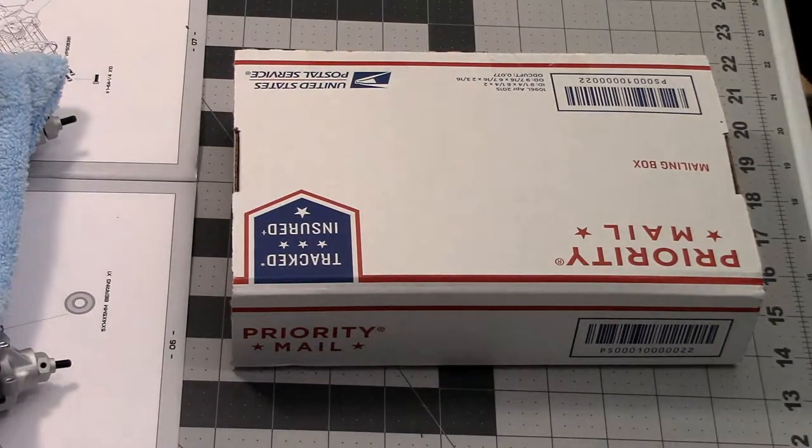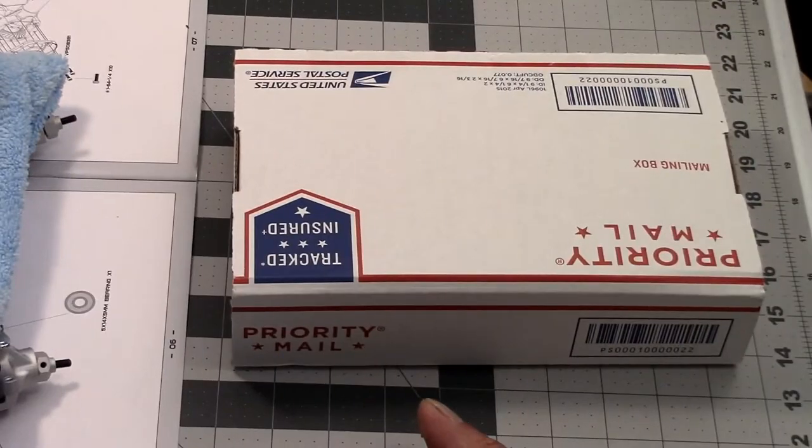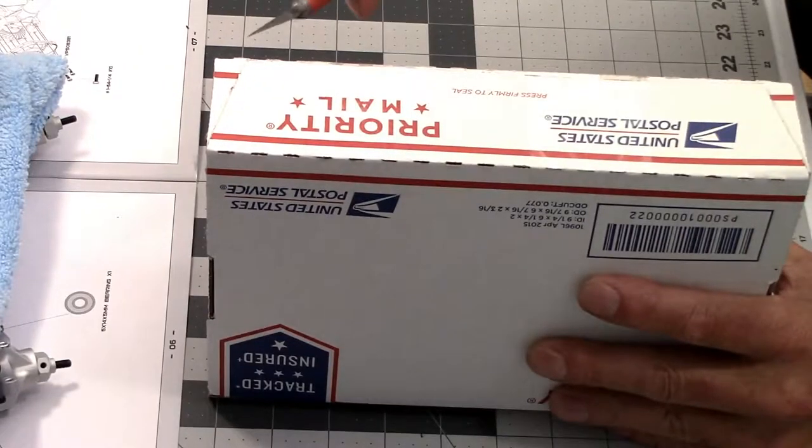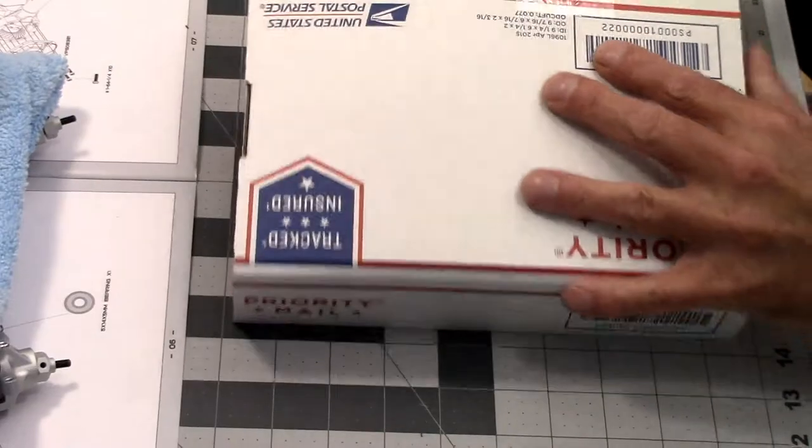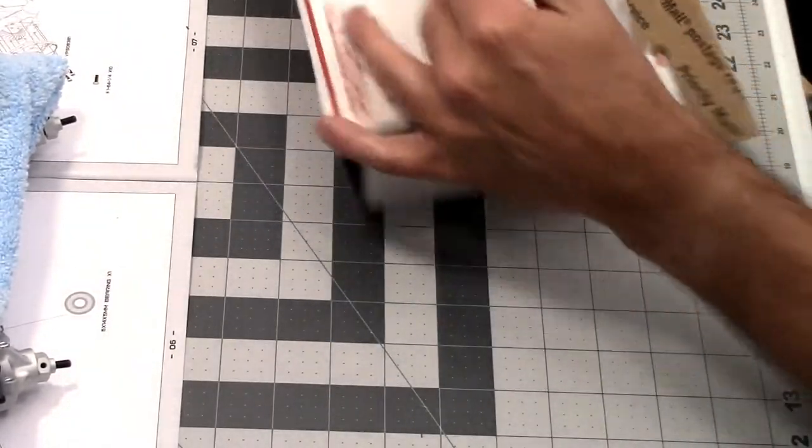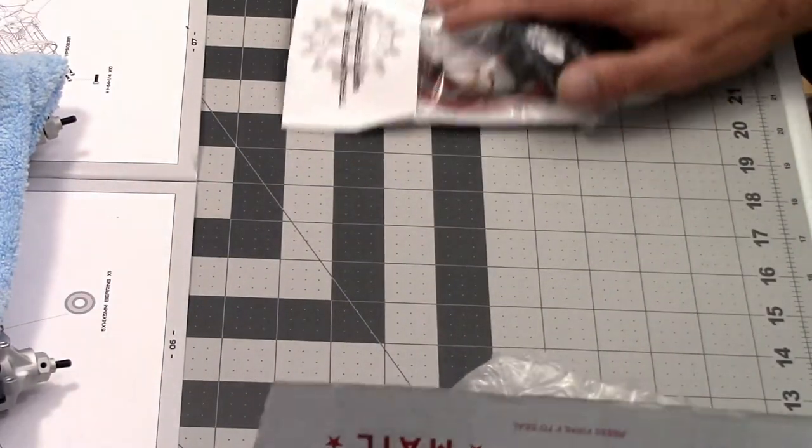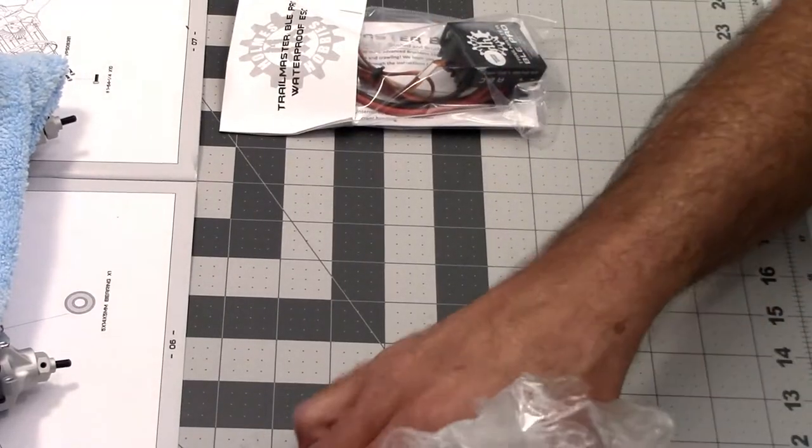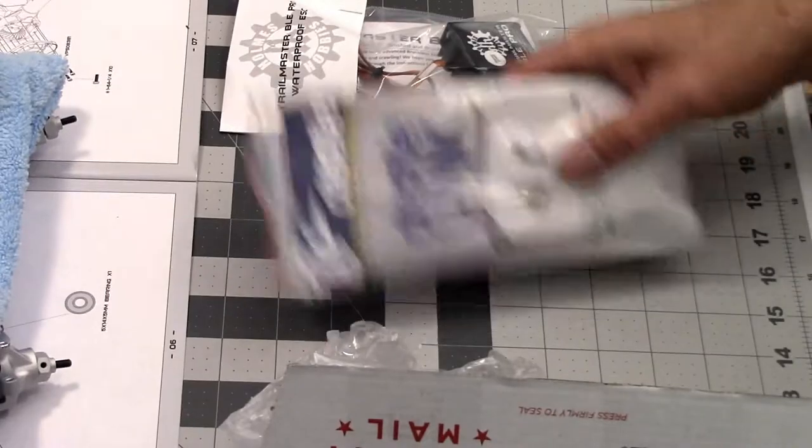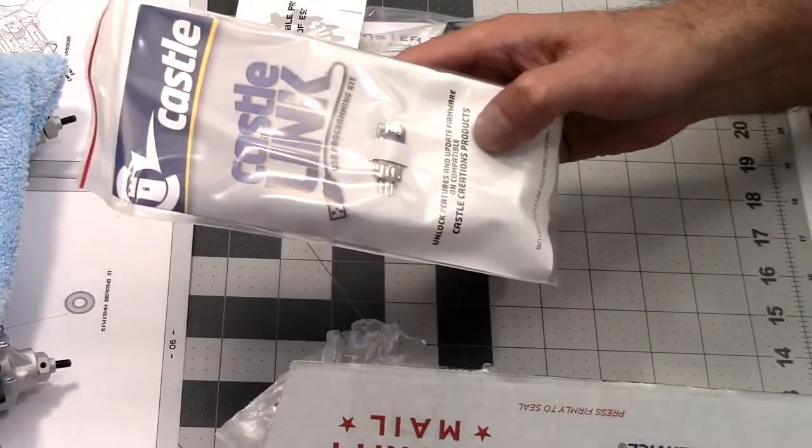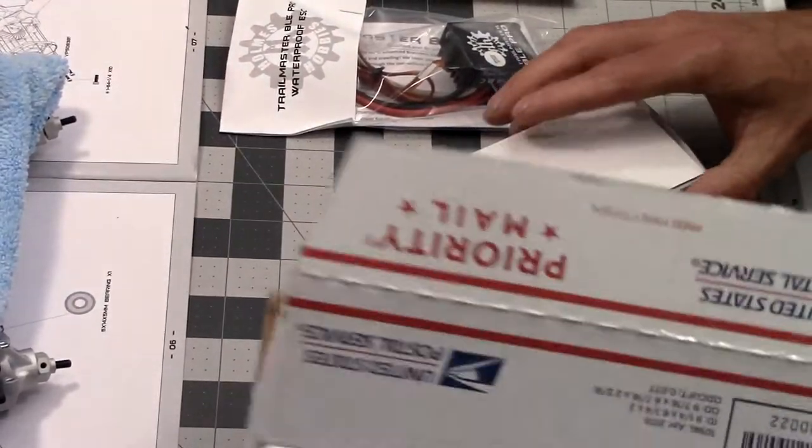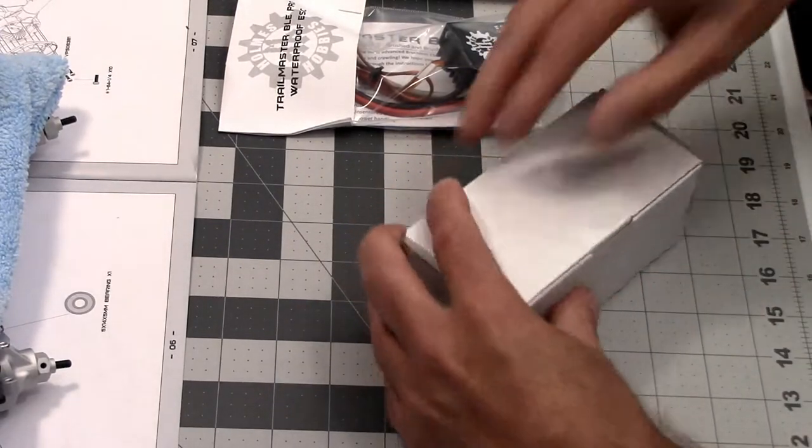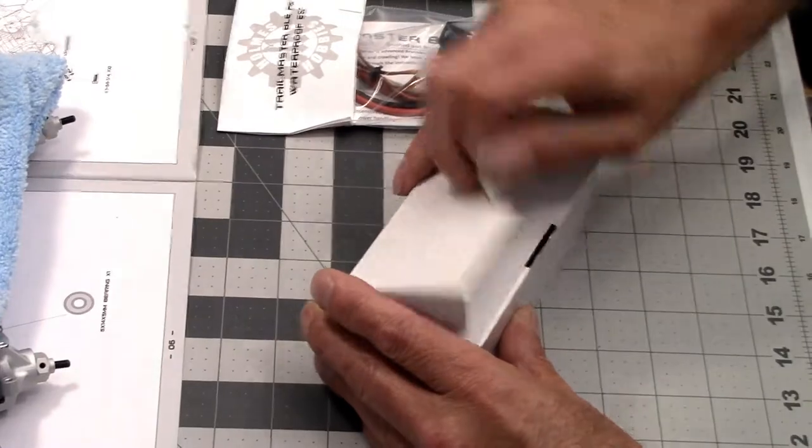What is going on everybody, got a package in the mail today. Check it out, this is for the Vanquish BS 410 power system. We have a Holmes Hobbies BLE Pro waterproof, and they had the Castle Link back in stock, so I can now program this fancy little box here. Something I have never used before.